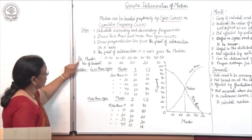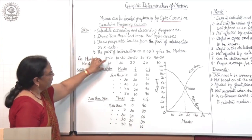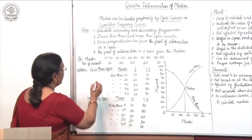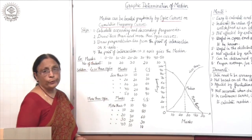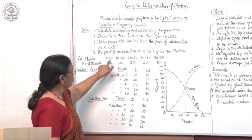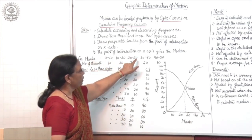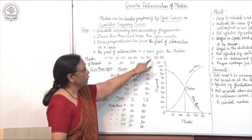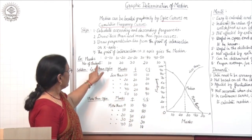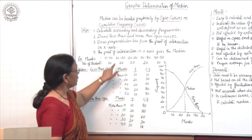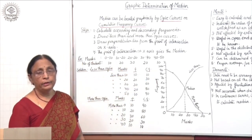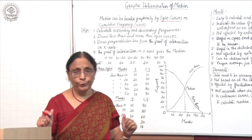Let us take the example. The data given shows marks and number of students, where number of students means frequency. Marks are given as 0 to 10, 10 to 20, 20 to 30, 30 to 40, and 40 to 50 — equal class intervals. The frequencies are 10, 20, 30, 20, and 10 respectively.